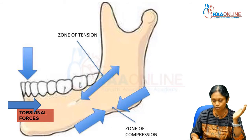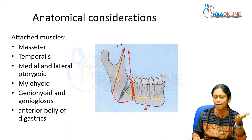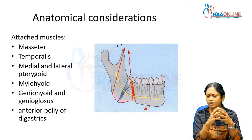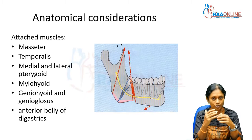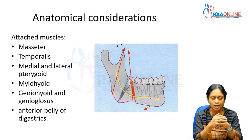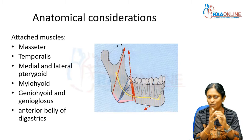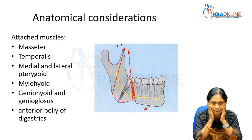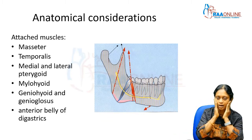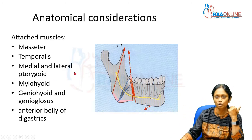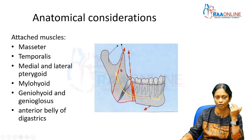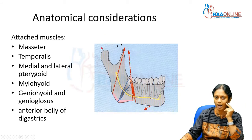Let's go into the anatomy to understand what forces are acting on the mandible. We call these the muscles of mastication, starting with the masseter on either side on the lateral aspect of the ramus, then the medial pterygoid on the medial surface of the ramus, the lateral pterygoids, and the temporalis.